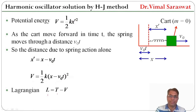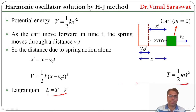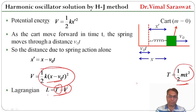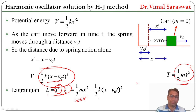Now we replace x dash by x minus v₀t, so the potential energy V equals half k times (x minus v₀t) squared. Since the Lagrangian L equals T minus V, we substitute kinetic and potential energy to get: Lagrangian L equals half m x dot squared minus half k times (x minus v₀t) squared.